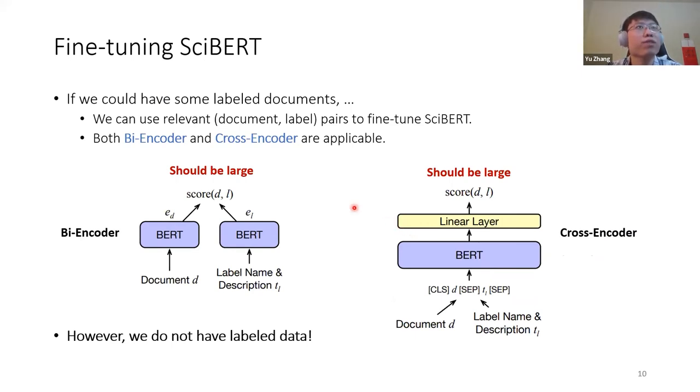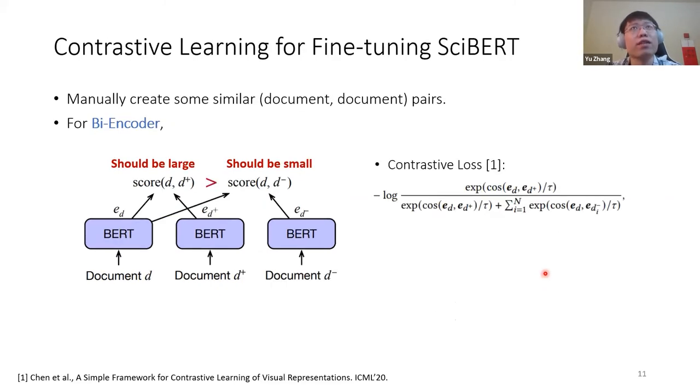So the question becomes how to fine-tune SciBERT. Before I talk about our own method, let's first imagine if we could have some labeled documents like we know some documents are related to beta coronavirus. We can use these training samples to derive those relevant document label pairs to fine-tune SciBERT. In this case, both bi-encoder and cross-encoder become applicable. For bi-encoder, I already introduced it. If D and L are relevant, this cosine similarity should be large. Also, we can use cross-encoder. Instead of using two SciBERT, we use one and we just concatenate D and TL, feed it into BERT and passing the CLS token into a linear layer to get the final relevance, a relevant score between D and L. So the problem is we do not have labeled data.